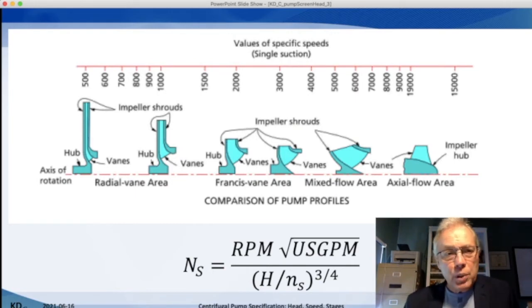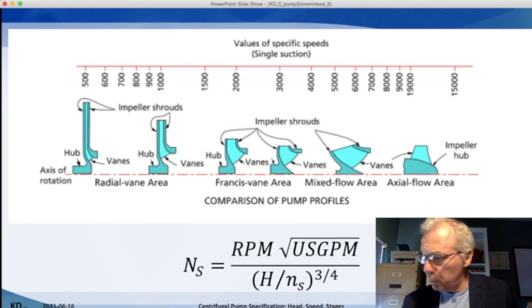A specific speed of 500 is very flat and looks like the disc brake on a car, whereas a pump with a specific speed of 10,000 or 15,000 is very axial and looks like a boat propeller.